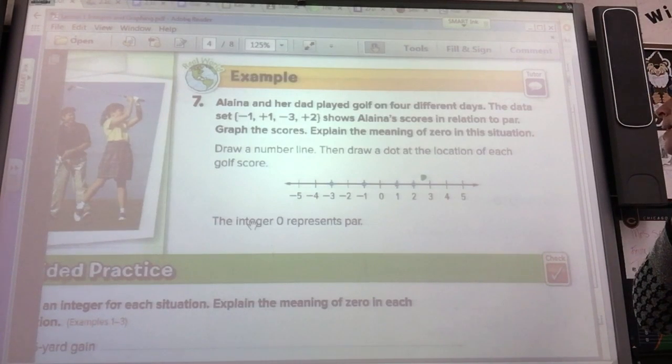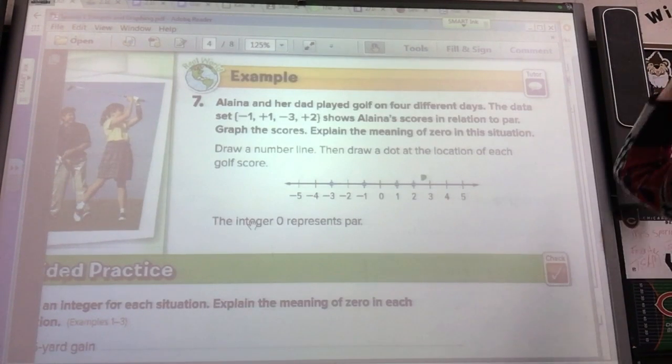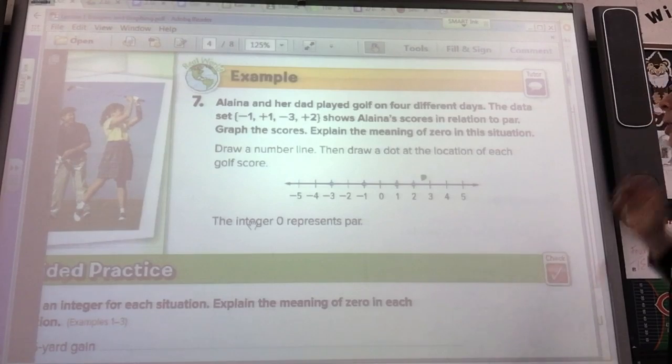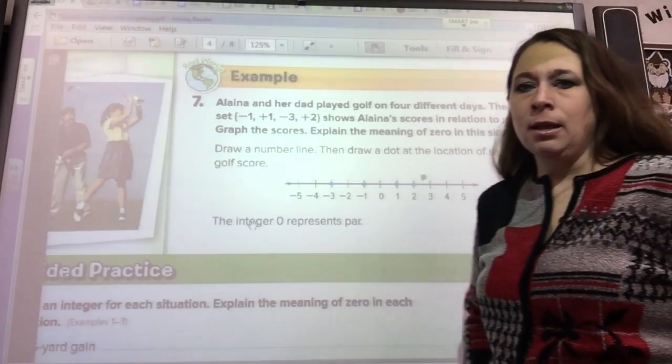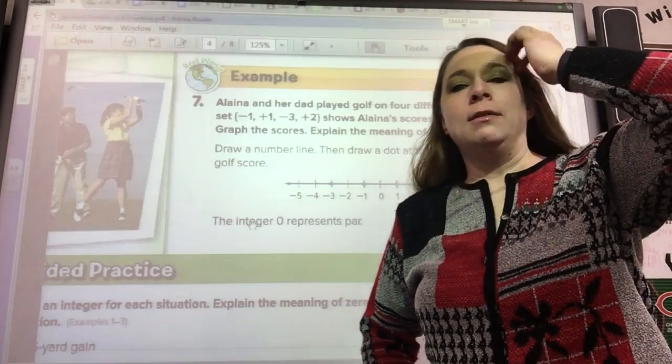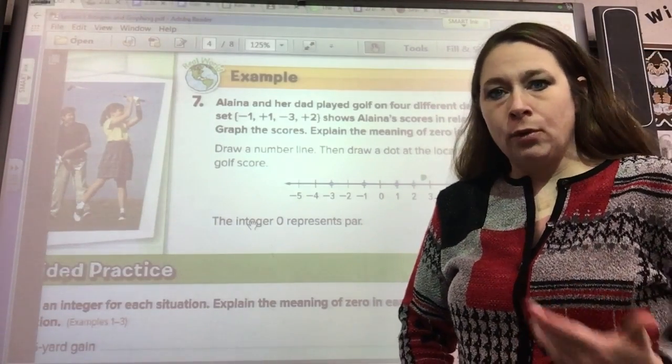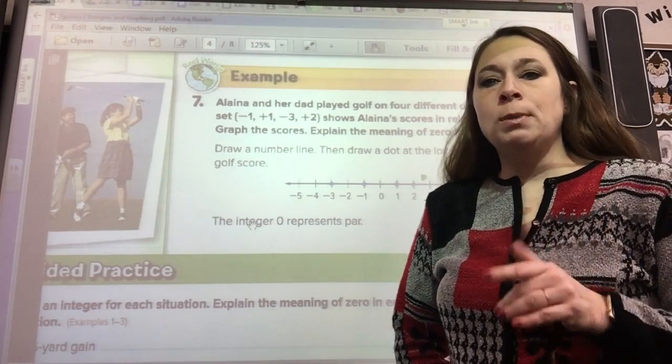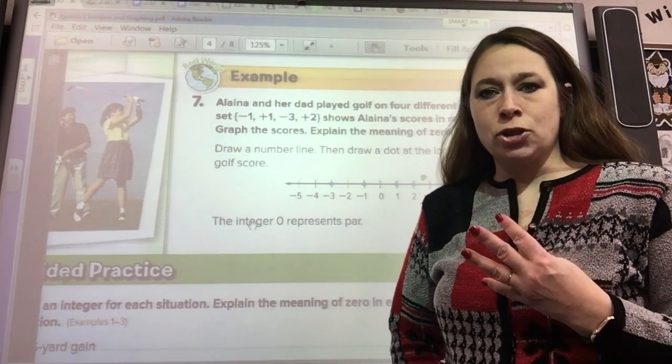Elena and her dad play golf on four different days. The data negative one, plus one, negative three, positive two shows Elena's scores in relation to par. Par means that's how many times you're allowed to hit the ball to make it in the hole. So if you go golfing, even if it's miniature golf, it'll say like par four, that means that you should be able to get that ball in the hole in four shots.